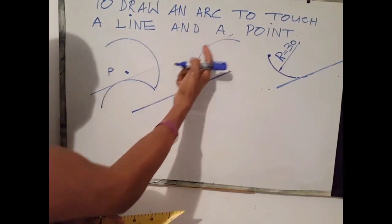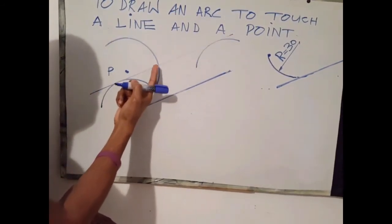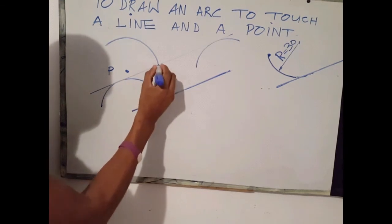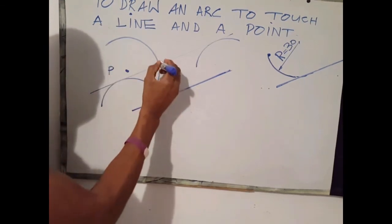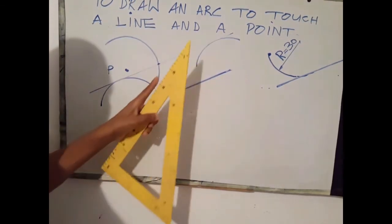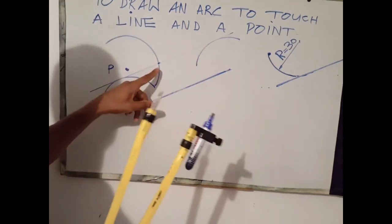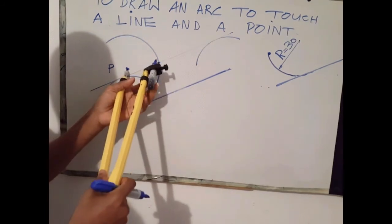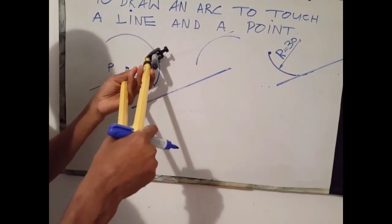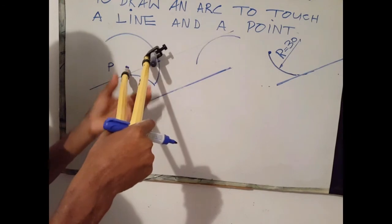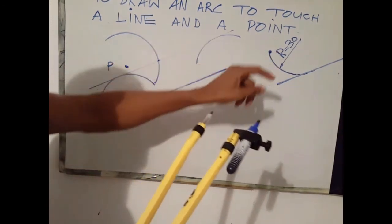At the point where the parallel line and the arc meet is our center. That center point is here. Using that center point as our center, we adjust your compass to 30 millimeters.